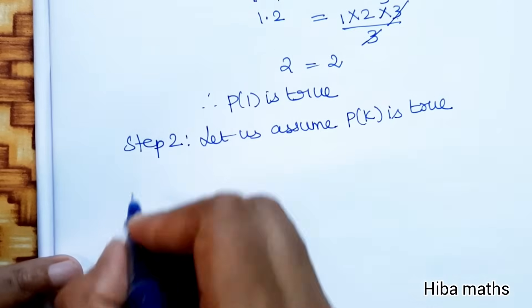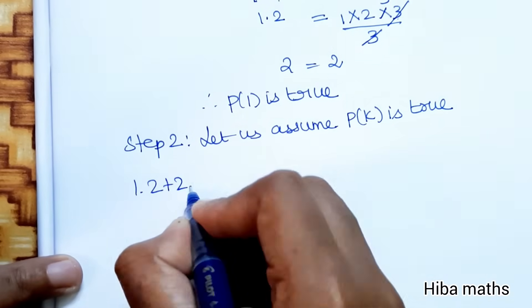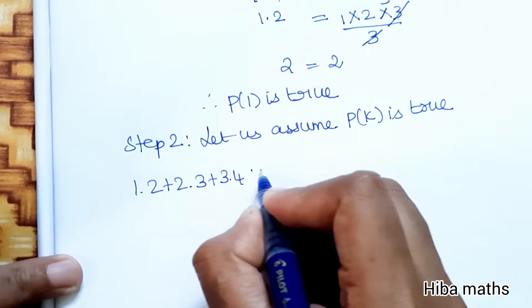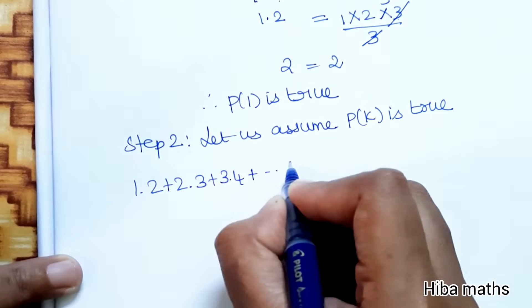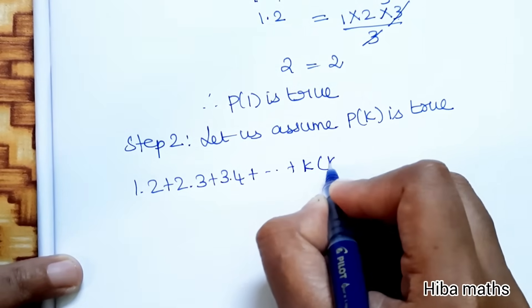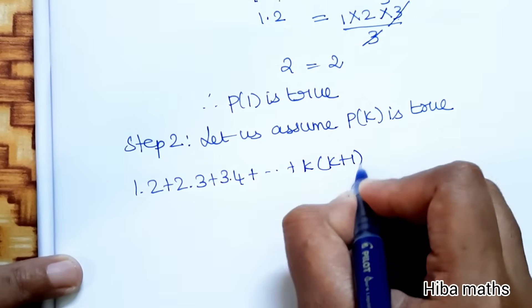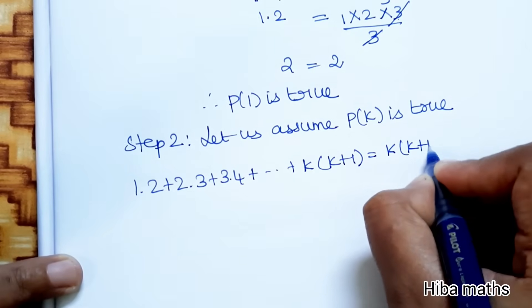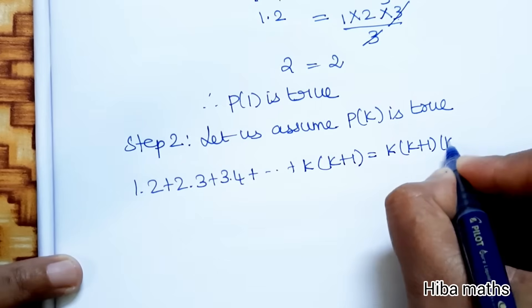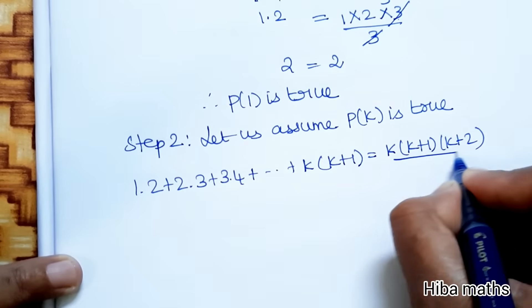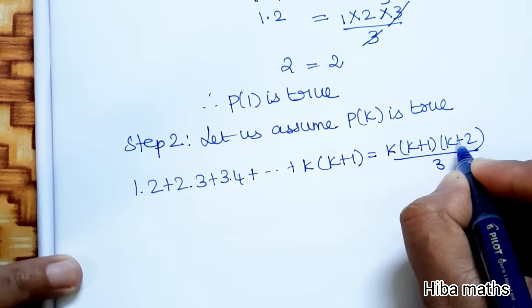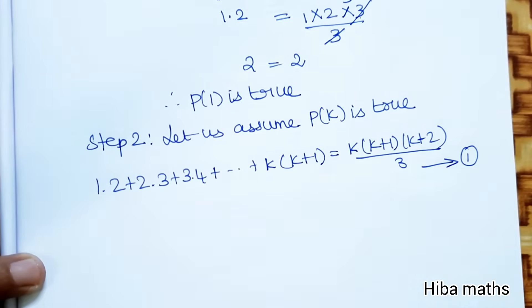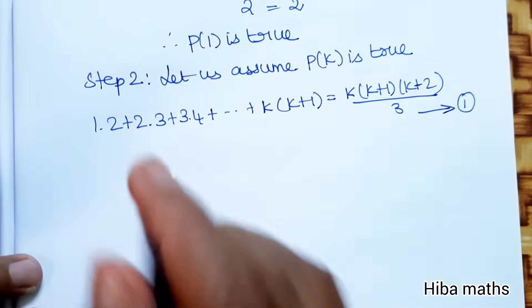Step 2: Let us assume P(k) is true. That is: 1·2 + 2·3 + 3·4 + ... + k(k+1) = k(k+1)(k+2) / 3. This is our first result.